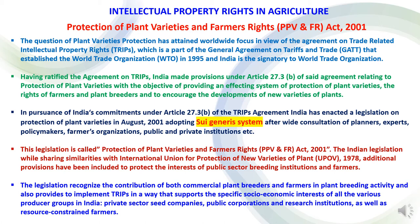Under the TRIPS agreement, India made provisions under Article 27.3 relating to protection of plant varieties, with the objective of providing an effective system for protection of plant varieties, the rights of farmers and plant breeders, and to increase the development of new varieties of plants. In pursuance of India's commitment under Article 27.3 of the TRIPS agreement, India enacted legislation on protection of plant varieties in August 2001, adopting a sui generis system for intellectual property rights, after wide consultation of planners, experts, policy makers, farmers' organizations, and public and private institutions.